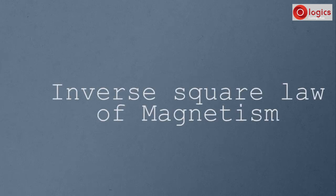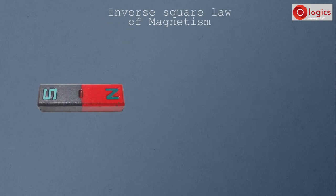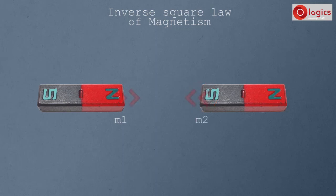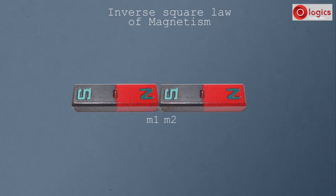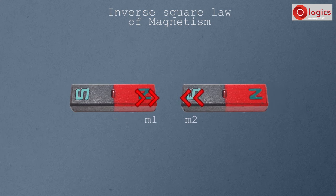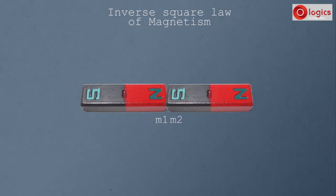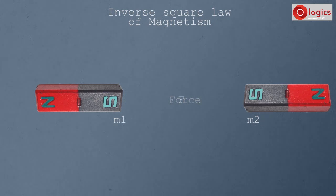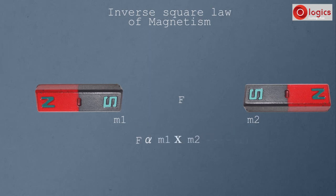Let us understand what is inverse square law of magnetism. This is one magnet, and this is another magnet. Let us say the pole strength of this magnet is M1, and pole strength of this magnet is M2. Attraction and repulsion between two magnets depends on the pole strength. If pole strength is more, attractive force is more; similarly, if pole strength is more, repulsion force is also more. Some force F acts between them, and F is directly proportional to the product of pole strengths — that is, F is proportional to M1 into M2. Let this be equation 1.